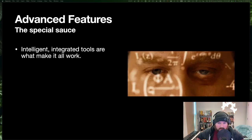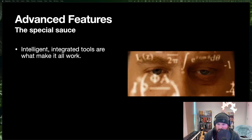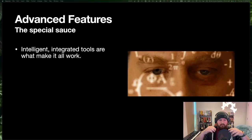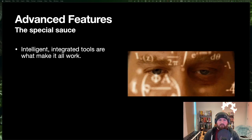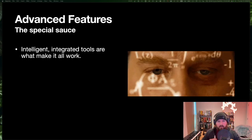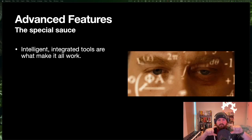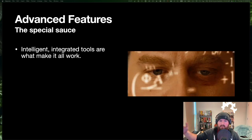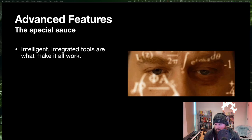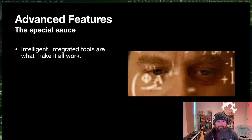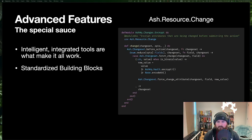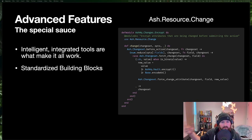What makes all of this special is that we didn't stop at a basic interaction layer — we continued to push the declarative model into all the different pieces. This enables new kinds of tools that I don't think exist elsewhere. One of the things that's really important is we have standardized building blocks that you can define and reuse in various places, or that libraries can provide for you.